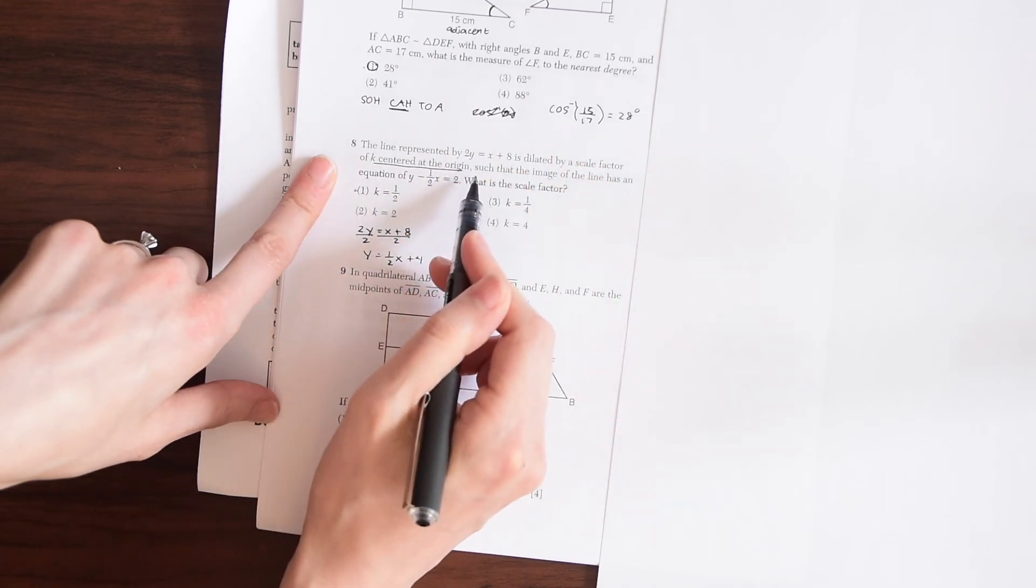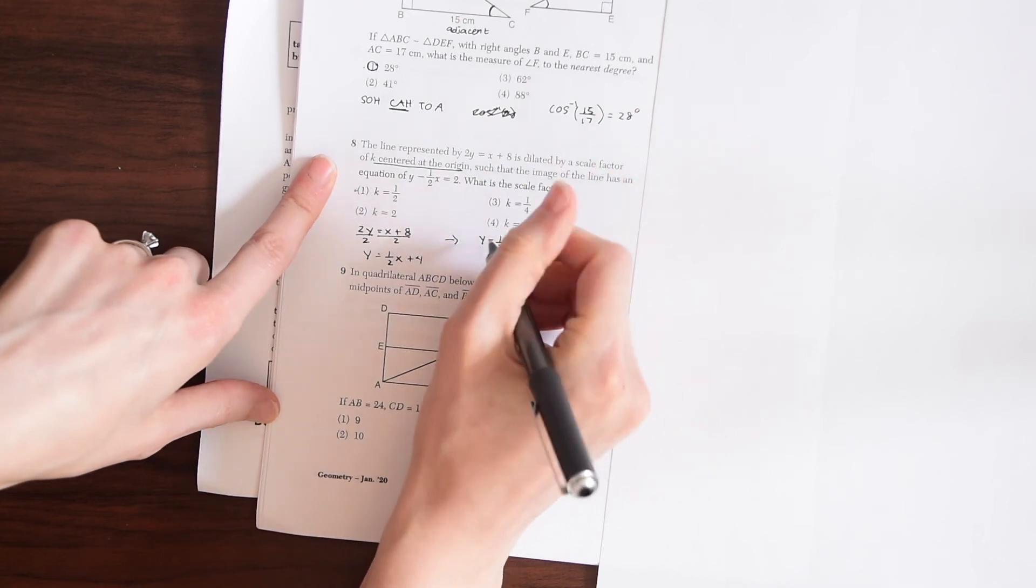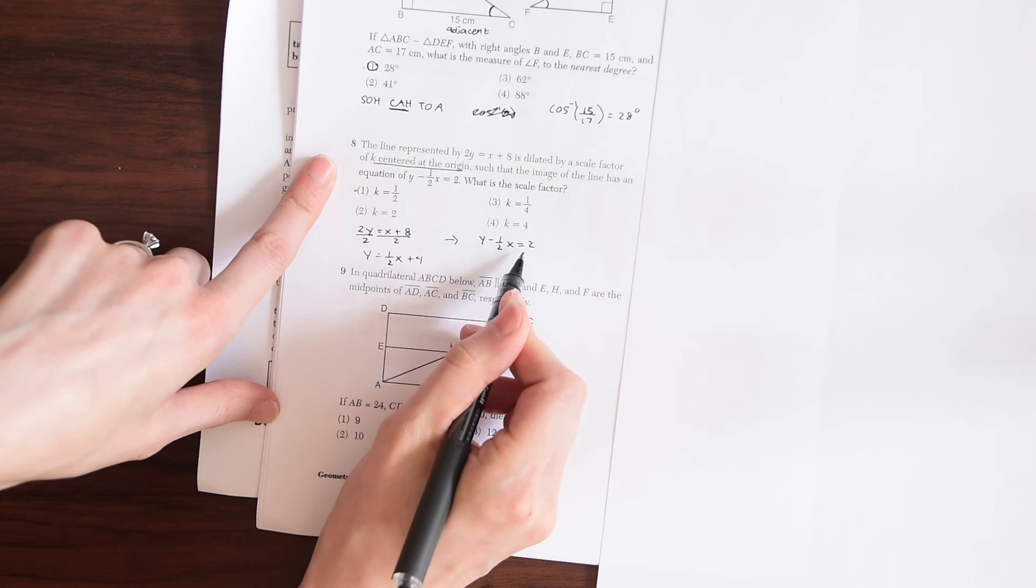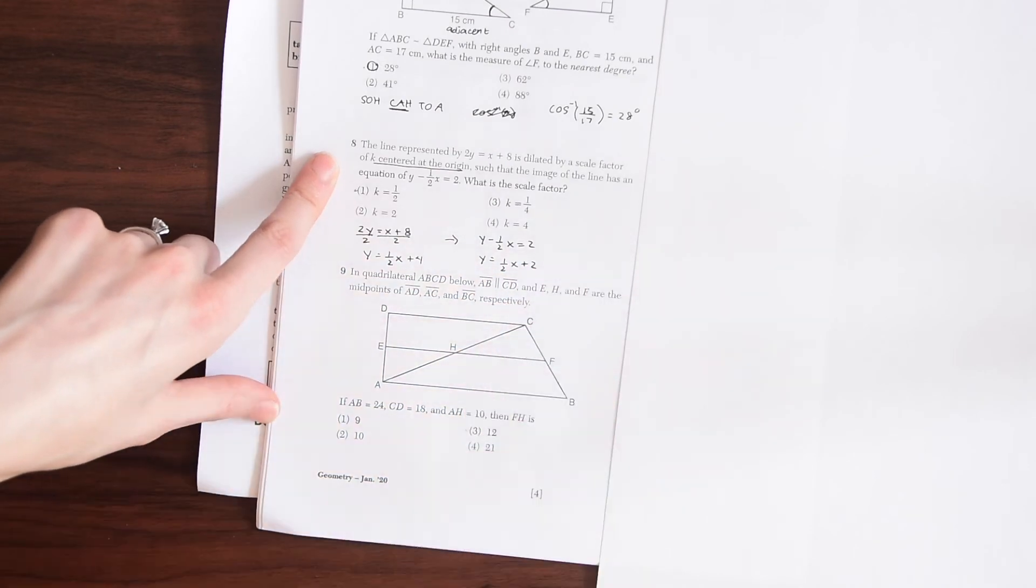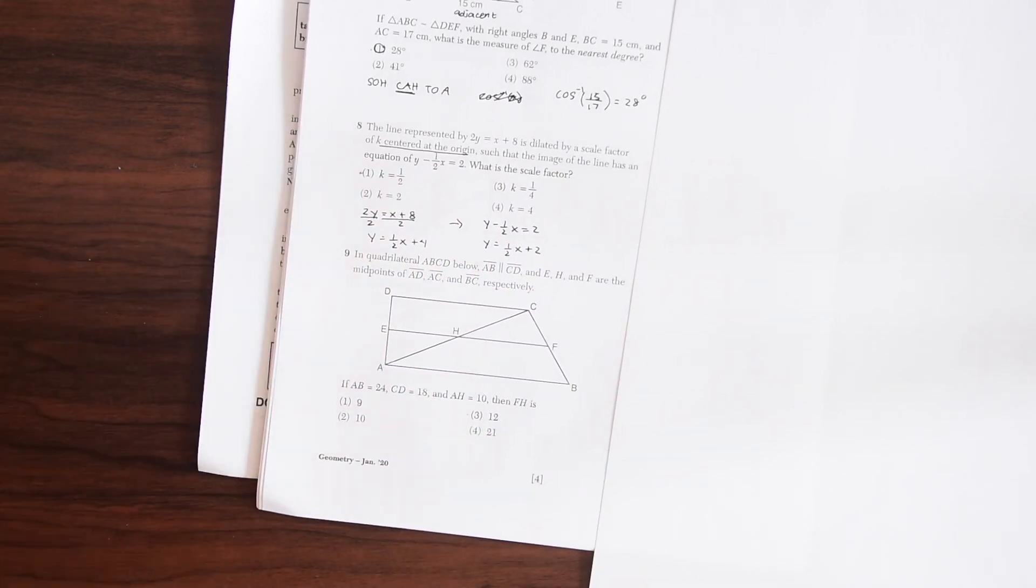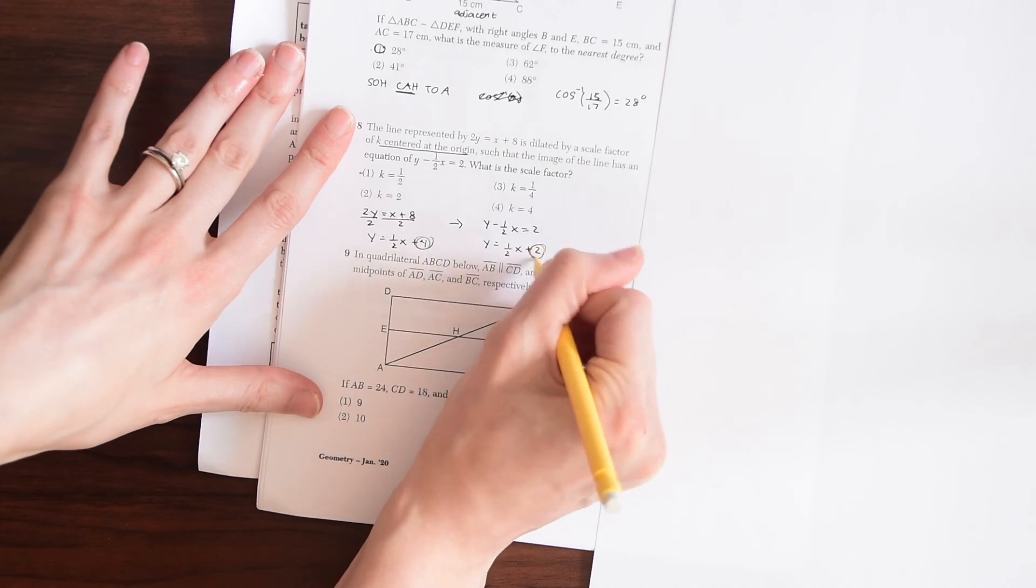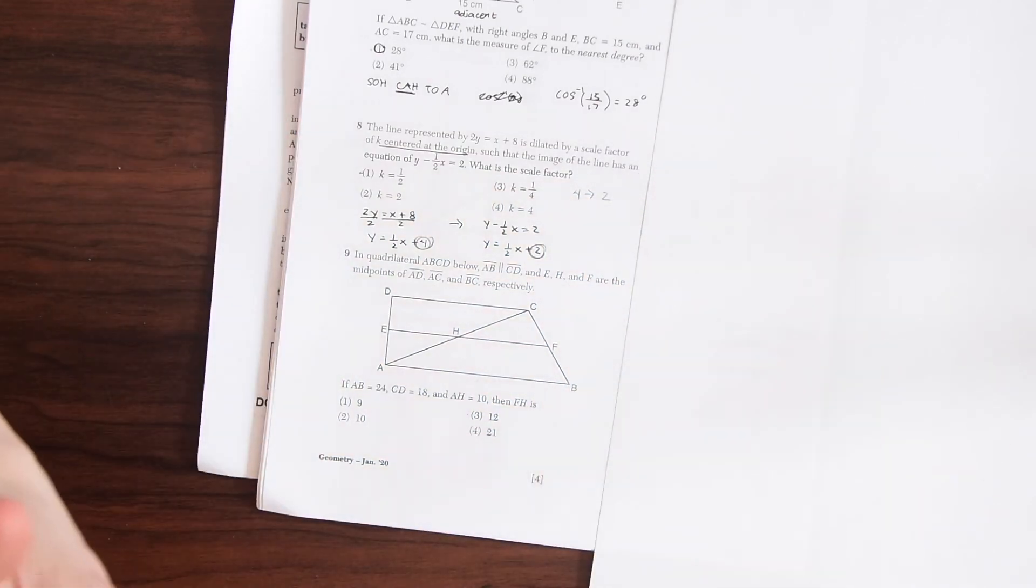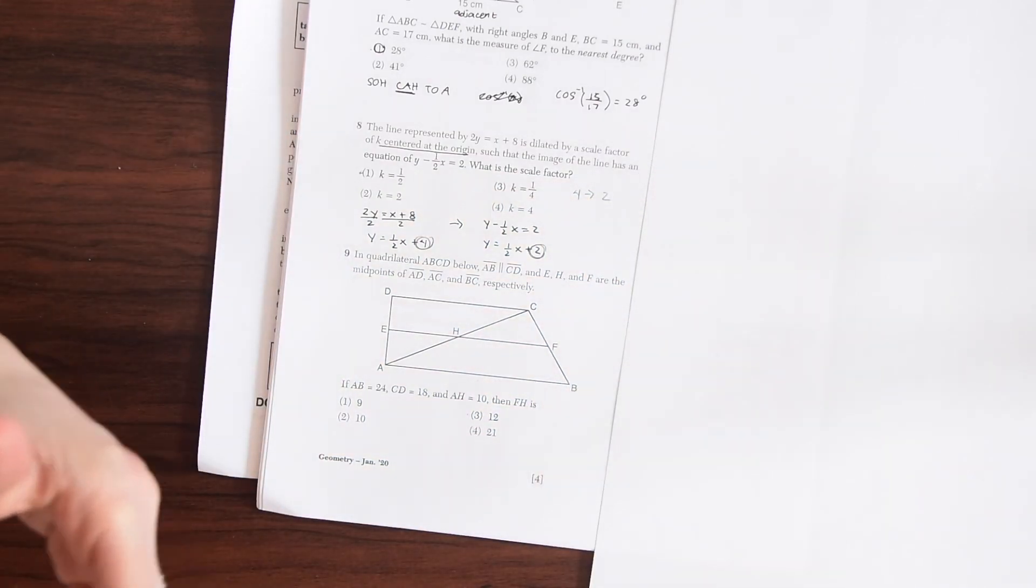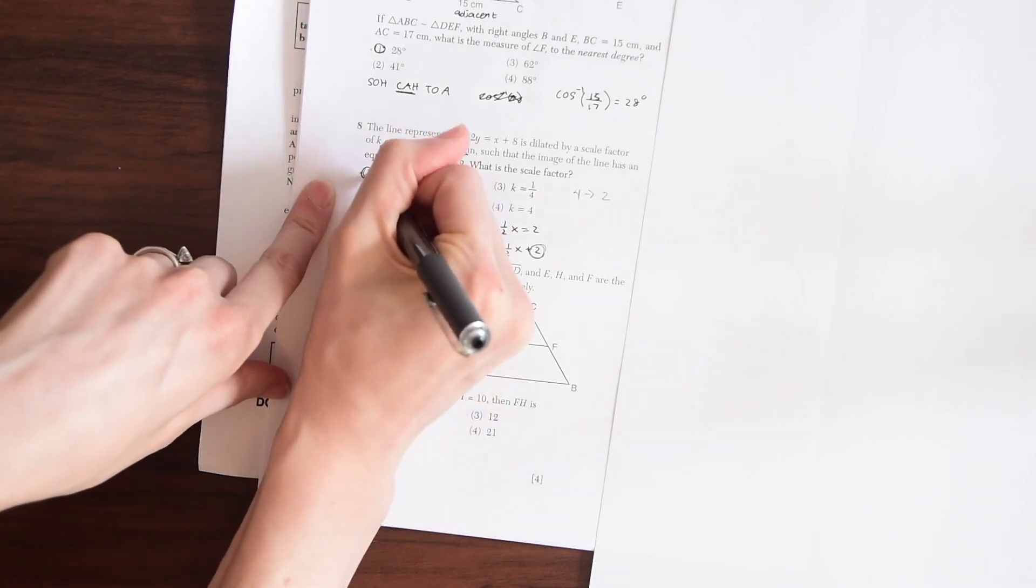And then after the dilation, it now becomes this line, y minus one half x equals 2. So we just need to move this one half x to the other side. And when we do that, we get y equals one half x plus 2. So because this is centered at the origin, and we have our numbers in order, we can easily just see that the y intercept goes from being a 4 to being a 2. So we need to ask ourselves, how do you make a 4 a 2? What are you doing to that number? So you can think of it as we're dividing by 2, or you can realize that we're multiplying times one half. So the scale factor here is one half.